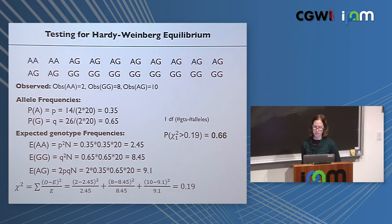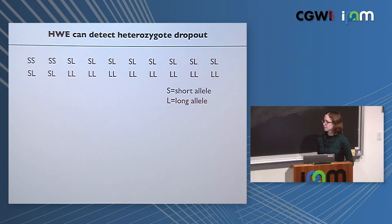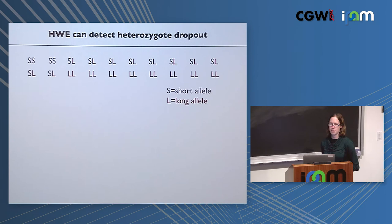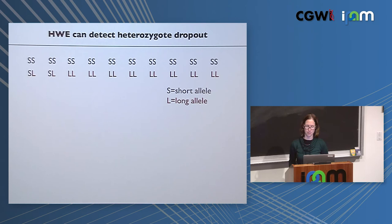We can calculate the expected number of homozygous genotypes by summing the squared frequencies across all alleles. Rather than asking how many people should be 5,5 specifically, we sum together 5,5 and 6,6 and 7,7, etc. In this case, we'd expect about 18% of individuals to be homozygous, and treat that as a binomial variable testable in R.